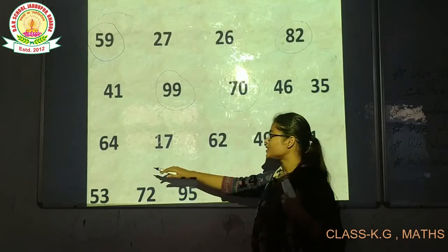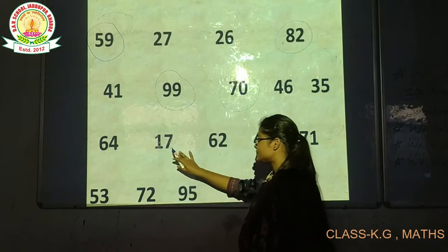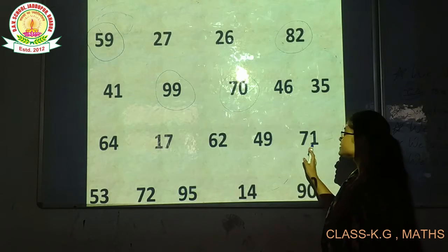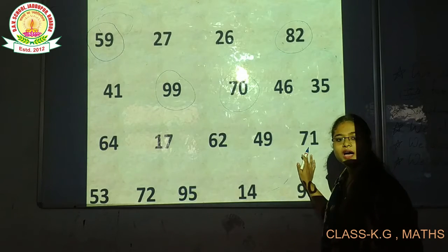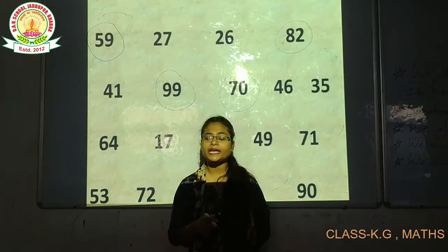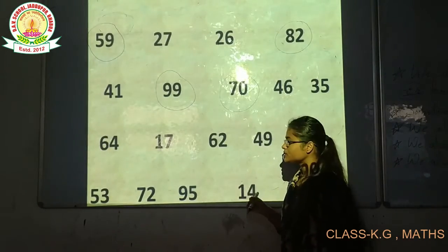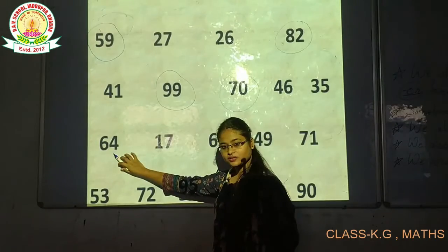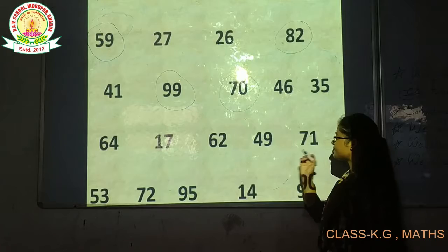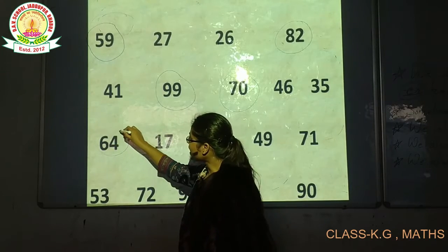Next numbers are 64, 70, 62, 41, 71. This number is between 50 and 100. 64, 70, 62, 48 and 70 — this number is between 60 and 100.